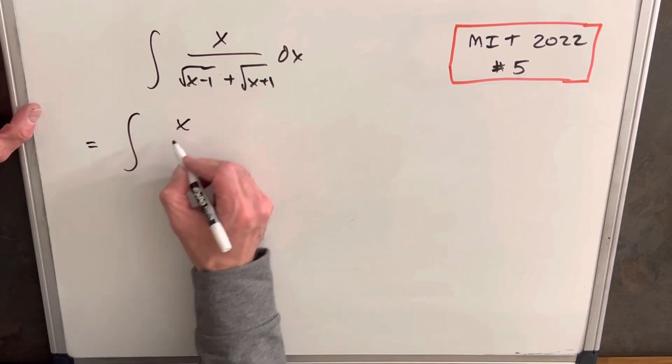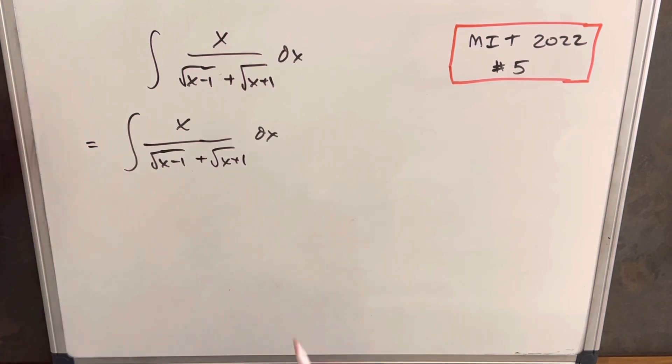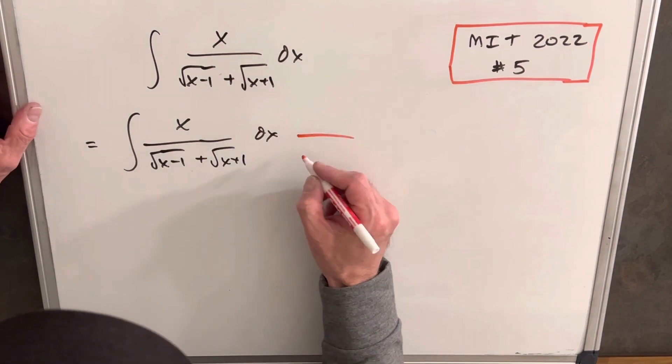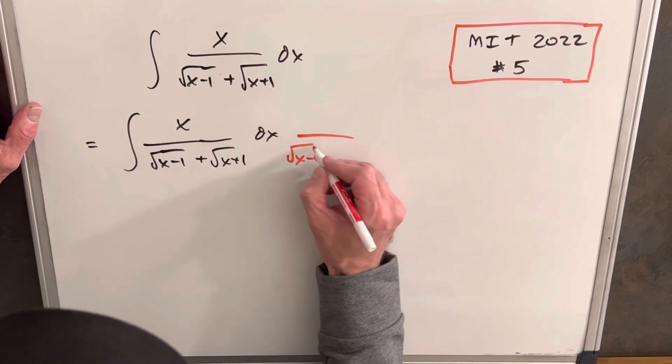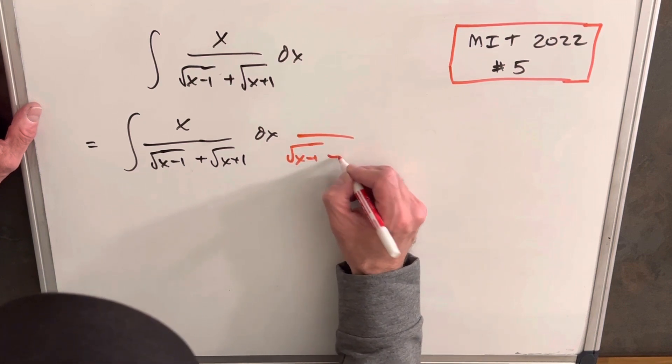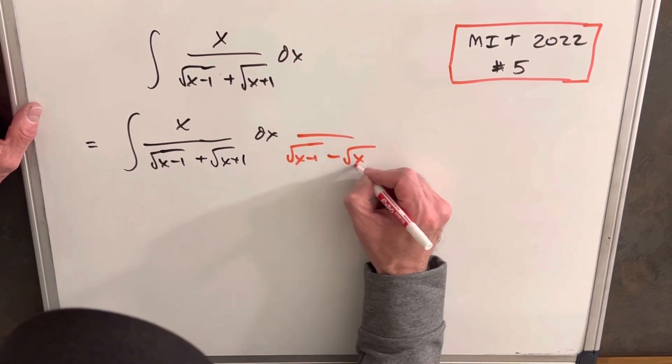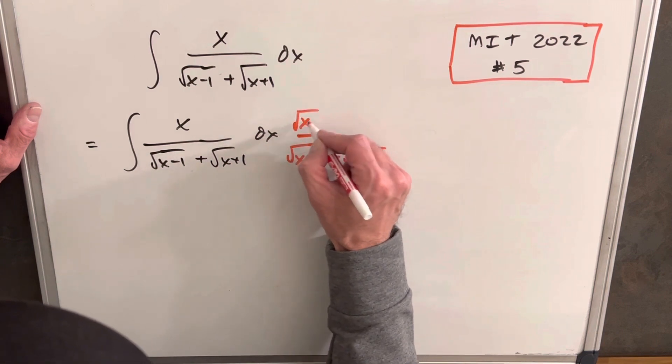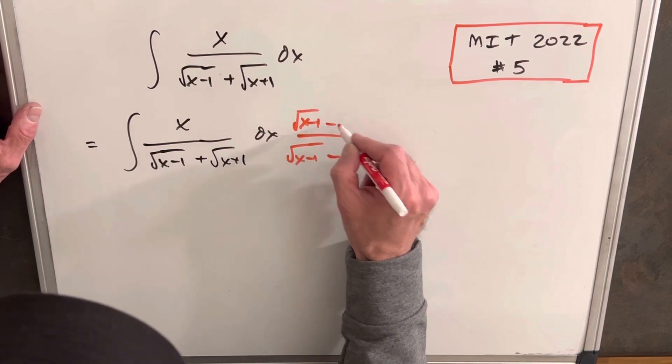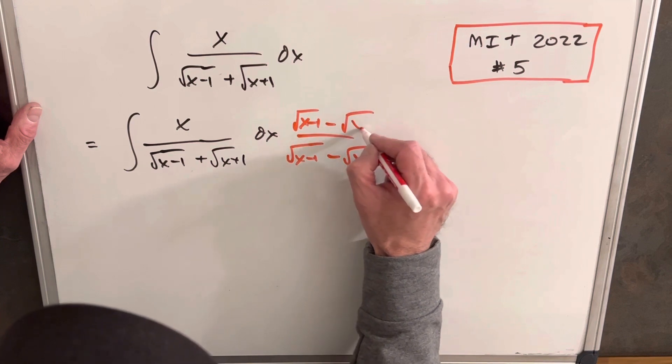So let's rewrite this. What I'm going to do is I'm just going to multiply the numerator and denominator by the conjugate. So we'll multiply by the square root of x minus 1 minus the square root of x plus 1. And then, of course, we'll do the same in the numerator so that we're not changing the expression. We're just multiplying by 1.